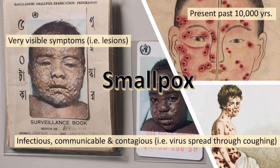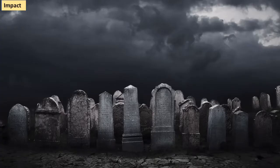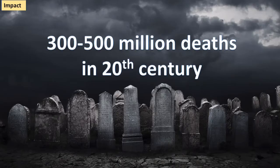It's an infectious disease spread by a virus. It's communicable and very contagious. The virus spreads when someone who has got it coughs, and the droplets spread it to someone else. It's a very impactful disease — in the 20th century alone, nearly 300 to 500 million people died from this disease, so it's something that organisations and world institutions wanted to deal with.